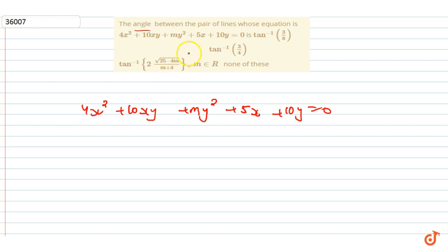So first we have to determine m value. Now, since this is a pair of straight lines, the pair of straight lines will satisfy a certain condition.